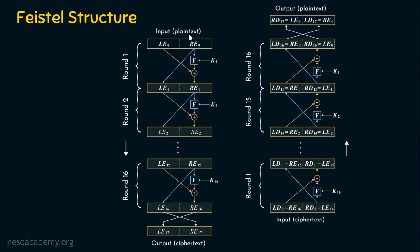Suppose the plain text size is 64 bits, then the left-hand side part is 32 bits and the right-hand side part is another 32 bits — 32 plus 32 gives the original 64-bit plain text. The right-hand side bits are given to a function which carries out some operations. This function computes some activities with the help of key k1.